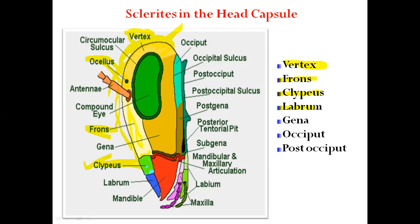The labrum is the upper lip of the insect, present in the anterior lowermost region of the head. It is the upper lip of the insect.